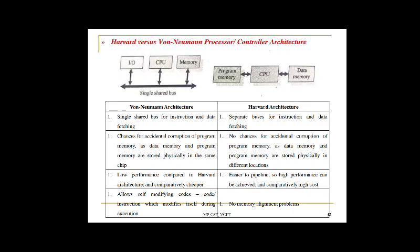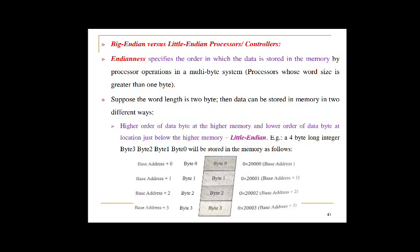Endianness specifies the order in which data is stored in memory by the processor. It is not applicable for processors with 8-bit (1-byte) word length, but applies for word lengths of 2 bytes or more. In little-endian convention, the higher-order data byte is saved at the higher memory address and the lower-order data byte at the lower memory address. For example, a 4-byte integer with bytes 3, 2, 1, 0 — byte 0 is stored at the lowest memory address (e.g., 0x2000).